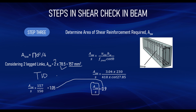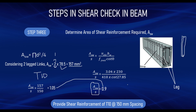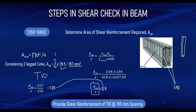The reason we use two-leg shear links is that a rectangular beam has links that wrap around the beam, forming two legs — one on each side. If the beam is very small and only one leg is used, you multiply the bar area by one instead of two. In conclusion, we provide shear reinforcement of 10 mm diameter bars at a spacing of 150 mm. That completes the three-step process for designing shear reinforcement. Thank you, see you in the next class.